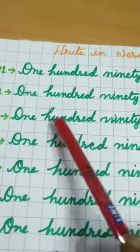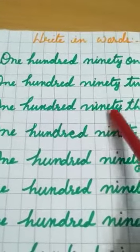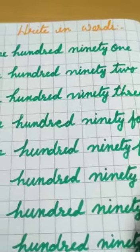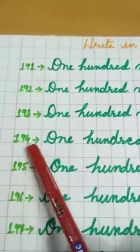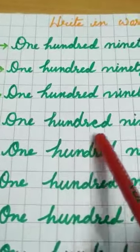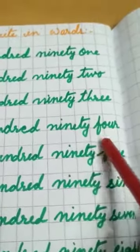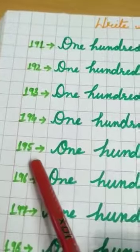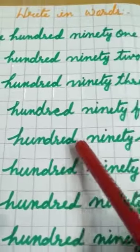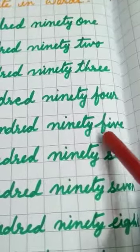193 — O N E H U N D R E D N I N E T Y T H R E E. 194 — O N E H U N D R E D N I N E T Y F O U R. 195 — O N E H U N D R E D N I N E T Y F I V E.